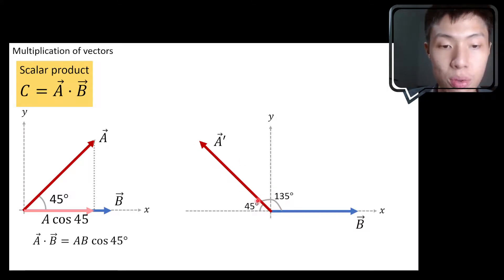then now the angle between them is 135 degree. If you want to find the dot product, you'll find that it's cos 135°. I'm keeping the magnitude of A the same as the magnitude of A over here.